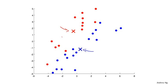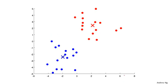Then we go back to another cluster assignment step, looking at all of the unlabeled examples and coloring them either red or blue depending on whether they're closer to the red or blue cluster centroid. Then we do another move centroid step — compute the average of all the blue points and the average of all the red points and move the cluster centroids accordingly. We repeat this process, and eventually the cluster centroids will not change any further and the colors of the points will not change any further. At this point k-means has converged, and it's done a pretty good job finding the two clusters in this data.